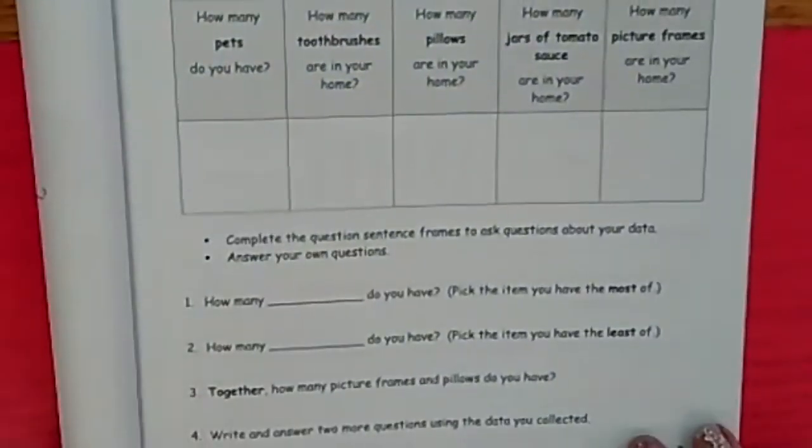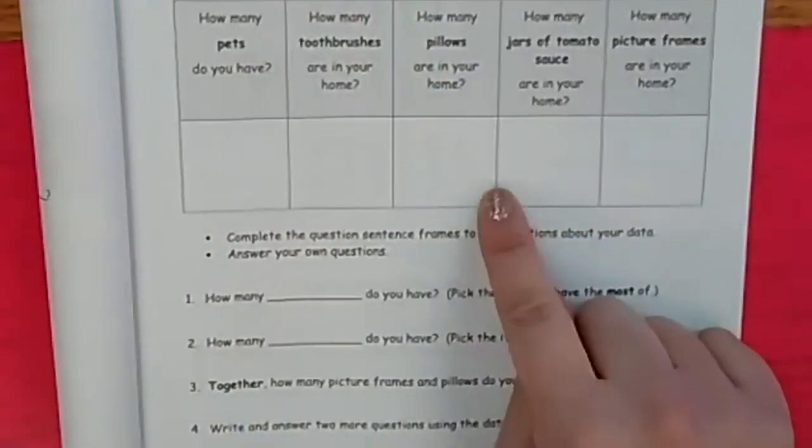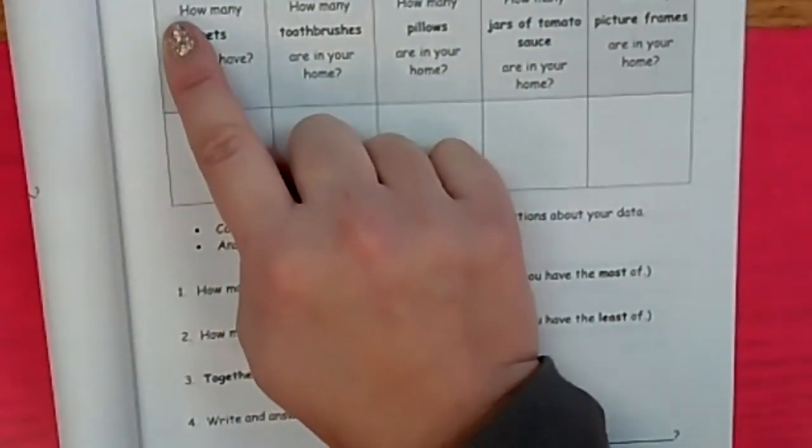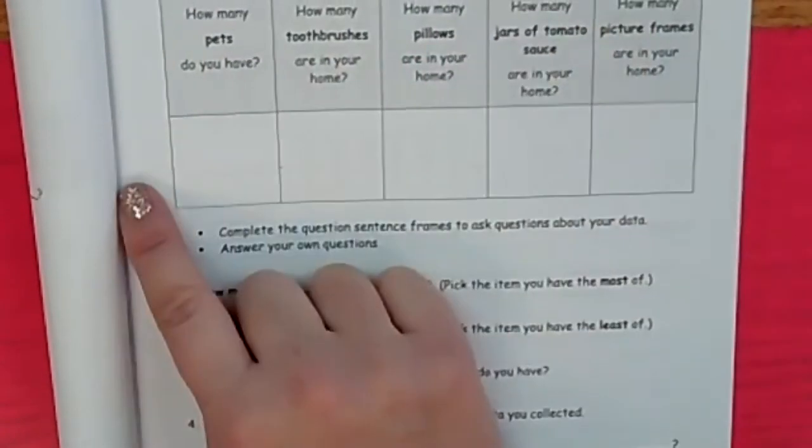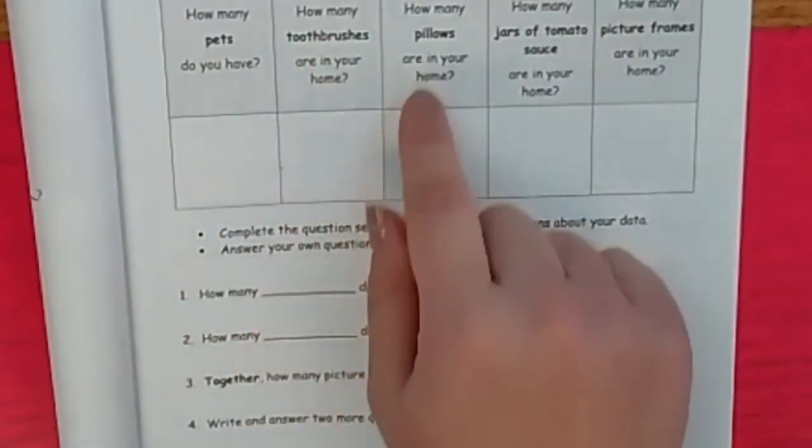But this time it says ask the people. So it says use tallies and numbers to organize how many pets you have, how many toothbrushes you have. That's fun because you get to travel around your house to do some data collection. Can't wait to see your work. I'll see you later. Bye.